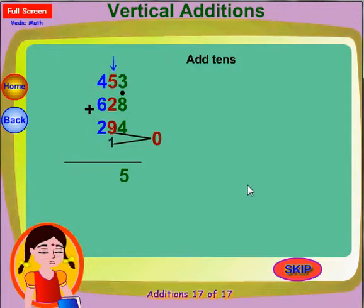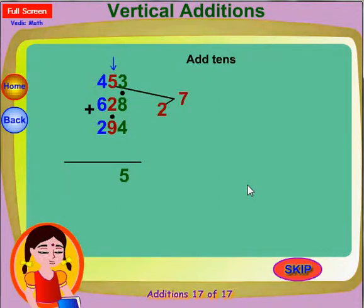10 has 1 ten and 0. So put a dot on 9 to indicate 10, and add 0 to 2. You get 2. Add 2 to 5. You get 7. Write 7 in the tens place in answer.